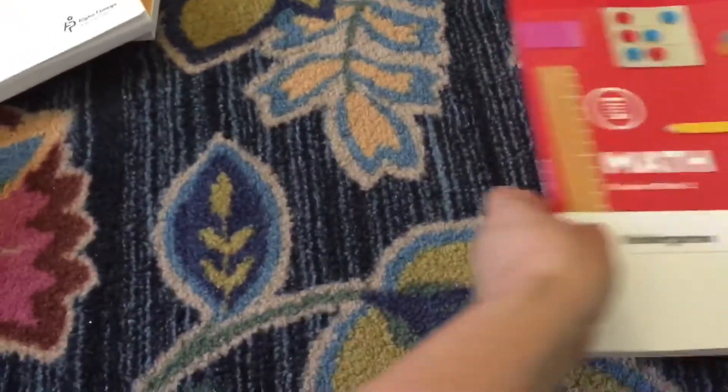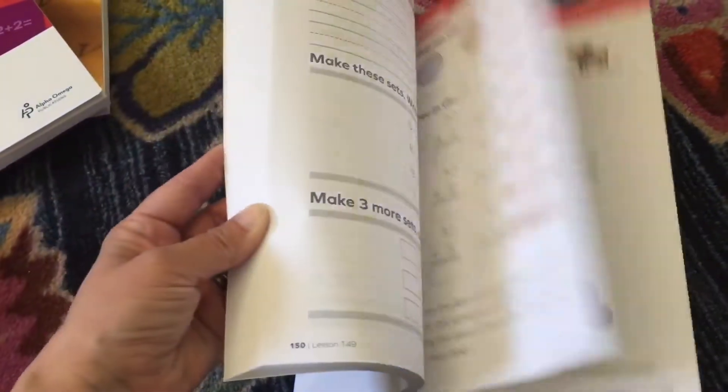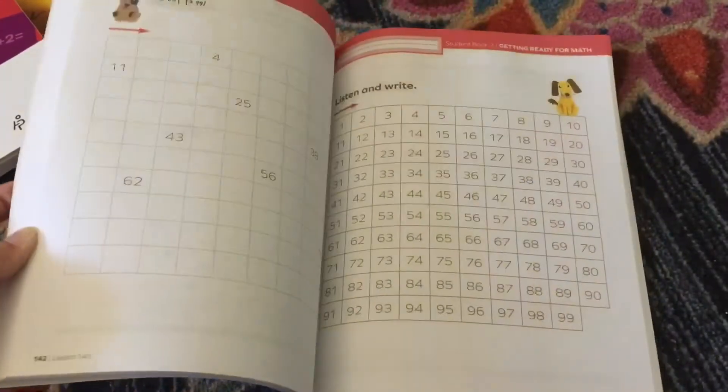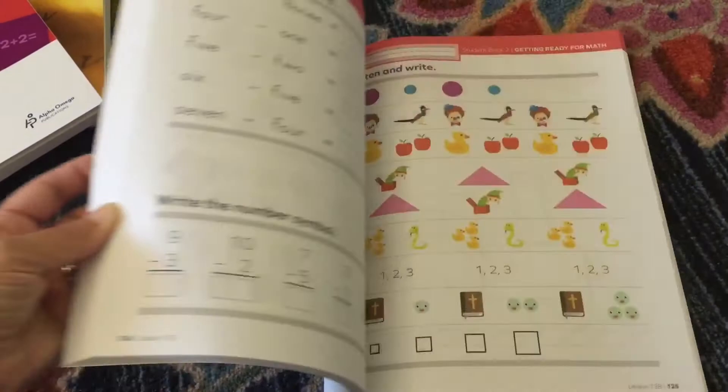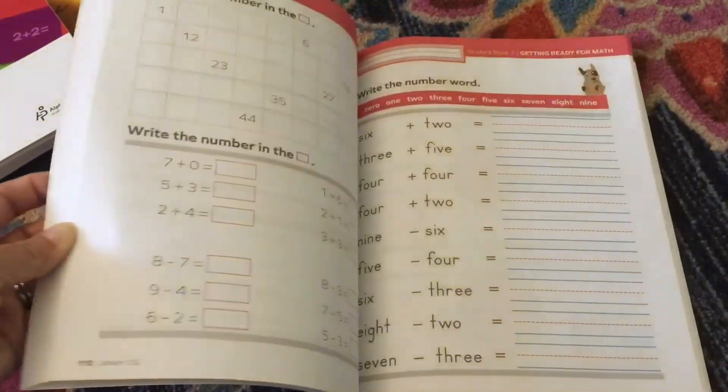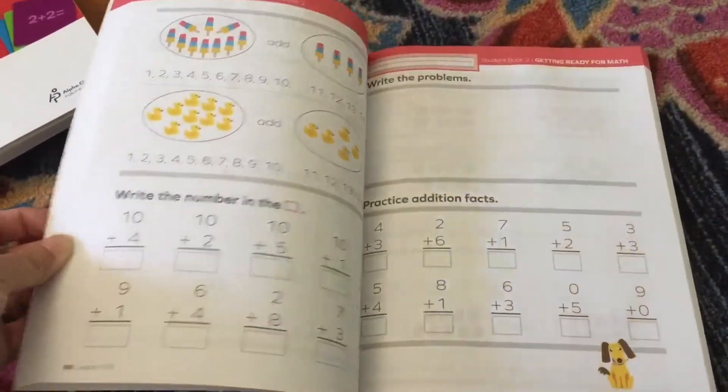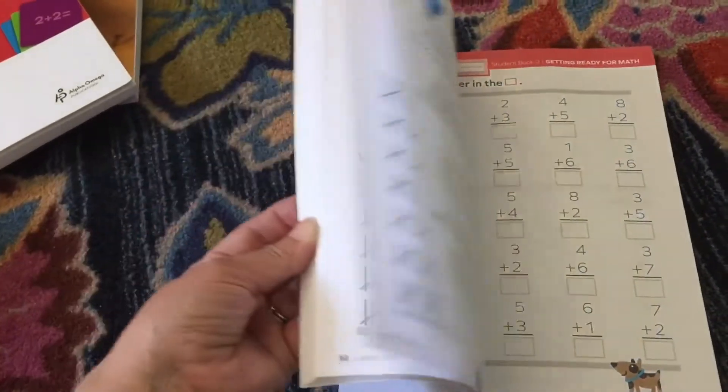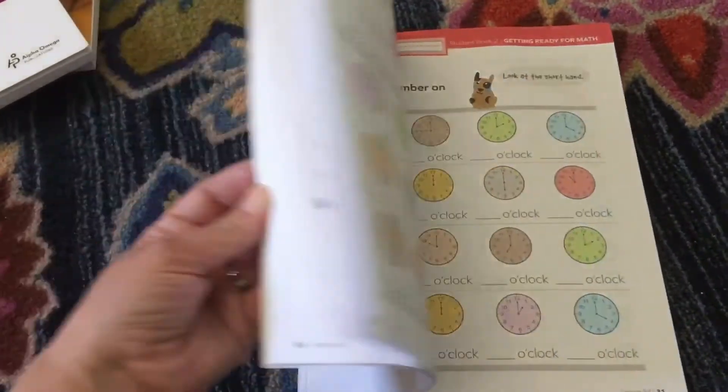I don't think this moves as quickly as Horizons does from what I've noticed, but I could be wrong. So they touch upon time, counting to 200, new shapes, lots of different concepts. So this is going to be great. I think I'll be able to measure her true grade level once we've worked through this a few lessons. Coming from the public school it's hard to gauge right now.